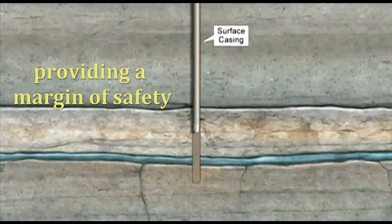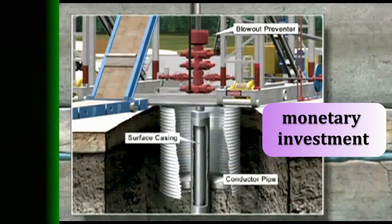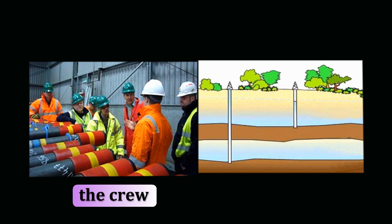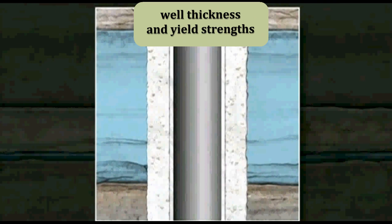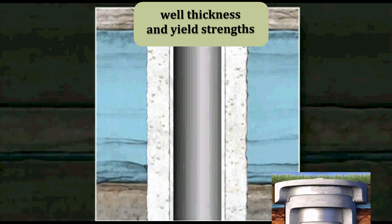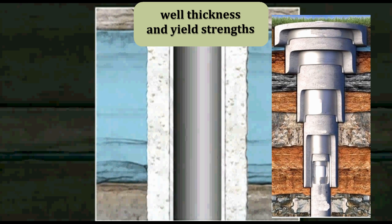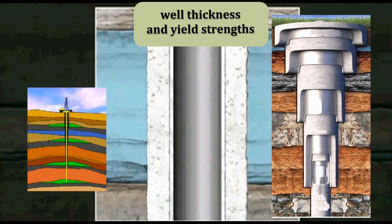Providing a margin of safety to protect the monetary investment, the crew, and the environment, casing designs can be critical, especially on deep, high pressure wells. The well thickness and yield strength of each string of pipe must be carefully planned to fit the conditions of the well.